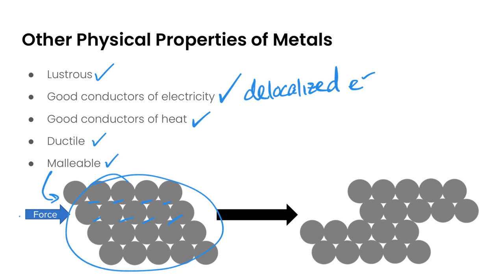In terms of malleability, if you apply a force here, so you can picture your hammer here, and you hit that metal, the layers can actually shift on top of and beneath itself. It's able to move like that because of this non-directionality of bonding without destroying any of the other properties or being brittle or falling apart like an ionic compound would.